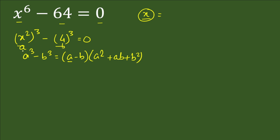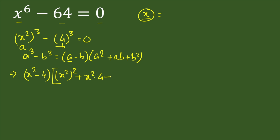Applying the identity, we write (a minus b) as the first bracket: (x² minus 4). The second bracket is (a² plus ab plus b²), which is (x⁴ plus x²·4 plus 4²), all equal to 0.